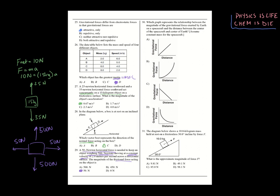Number thirty: which graph represents the relationship between gravitational force and distance? Distance is r, and in the equation r is in the denominator with an exponent — making this an inverse square relationship. One goes up, the other goes down exponentially. That's choice D. When it comes to gravity, we're talking about an inverse square relationship, not a simple inverse.